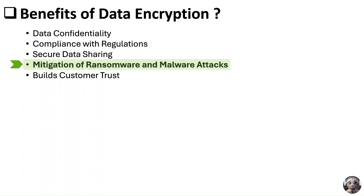Next is mitigation of ransomware and malware attacks. Encryption can help mitigate the impact of ransomware and malware attacks by ensuring that sensitive data remains inaccessible to attackers even if they gain access to the network. If data is encrypted properly and regularly backed up, the attackers have less leverage to extort organizations since they cannot easily access or misuse the encrypted information. This reduces the impact of ransomware attacks and helps maintain business continuity.